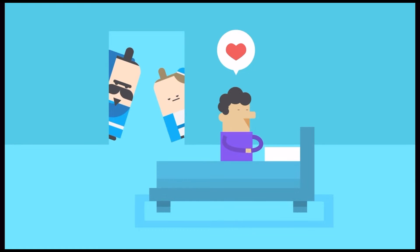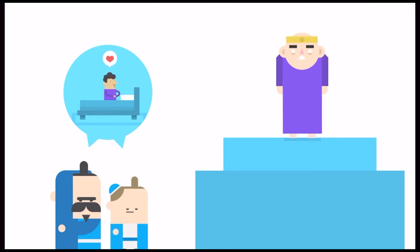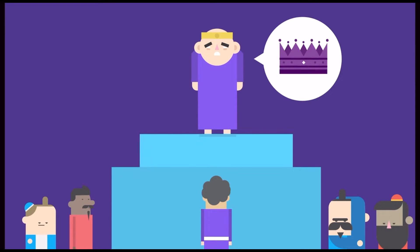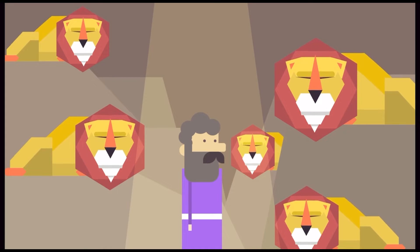Daniel kept right on praying, though. And when King Darius found out, he was sad. He didn't want to punish Daniel. But now it was the law. He said, may your God rescue you. And guess what? God did! He sent an angel to shut the lions' mouths.